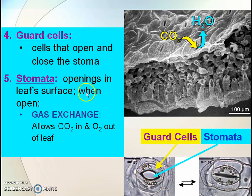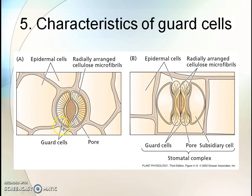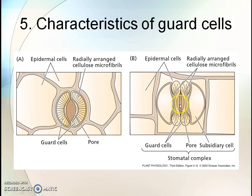The stomatal opening is in the leaf surface. When open, gas exchange allows CO2 in and O2 out of the leaf. These are the guard cells and subsidiary cells. Guard cells are kidney-shaped when they are open. When they are closed, they are elliptical, with the inner wall moving inward and the stomata closed.